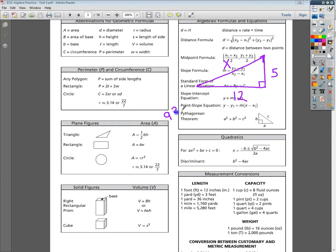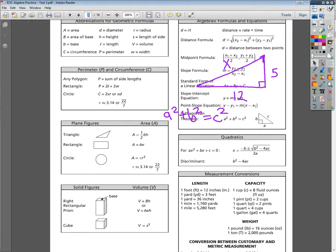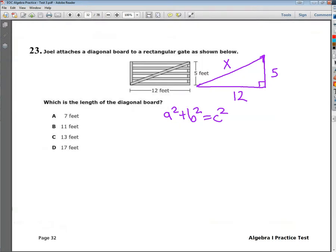And I know that the right angle, the a and the b, are made up by the sides that make the right angle. Now I'm going to try to guess where that problem was located. All right, I remembered.